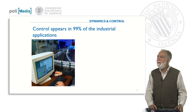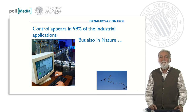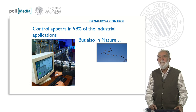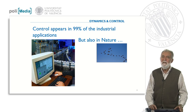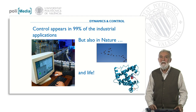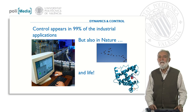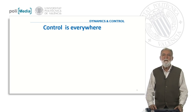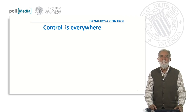Control appears in most industrial applications — here you can see a packaging plant with bottles, which requires some control. But control also appears in nature. When you see birds flying, they are not crashing into trees or into each other; they are exchanging information and flying accordingly. Even at the molecular level, molecules are not randomly connected — they form systems. Control is everywhere, not only in nature but also in human-made systems.